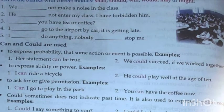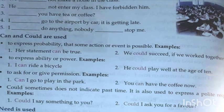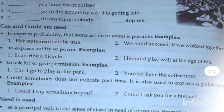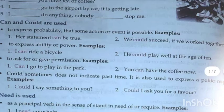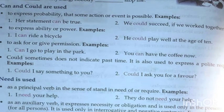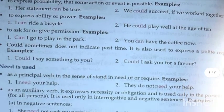Can and could. Could is the indirect form of can and is a little more polite. Both show probability. For example: Her statement can be true. To express ability or power: He could play the game at the age of ten. For permission: Can I go to the park to play? You can have the coffee now. Could is also used for polite requests: Could I say something?